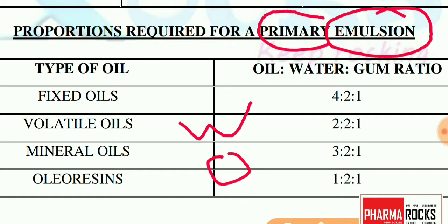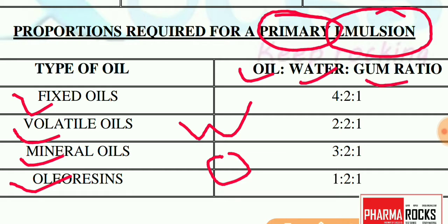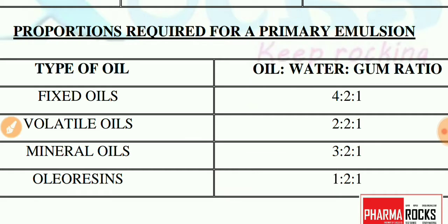In the emulsion, we use various types of oils like fixed oil, volatile oil, mineral oil, and resins. We have to make the emulsion by using the oil, water, and gum ratio. So we have to take various ratios of oil, water, and gum to make the emulsion.